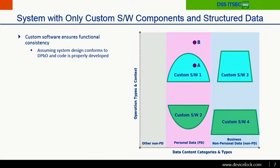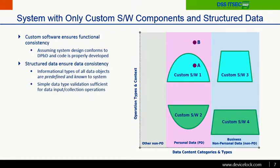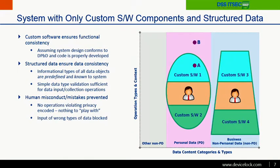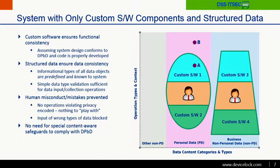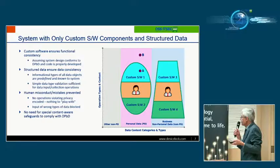For the case when a system only has custom software components and structured data, its functional scope corresponds to the ideal case. Custom software components are 100% controlled by developers, so if developed properly, there is nothing undeclared or uncontrolled. Custom software components also control human behavior — humans cannot perform operation B that software number one is not designed to perform. In this case, no special content-aware safeguards are needed to comply with data protection by design requirements. DLP is not required.